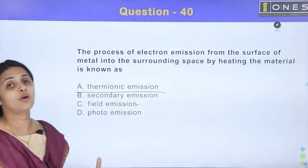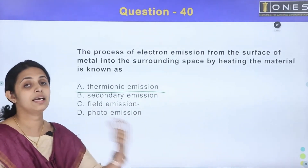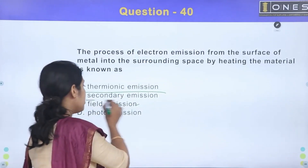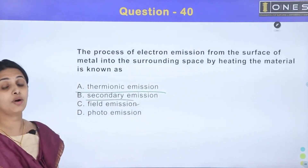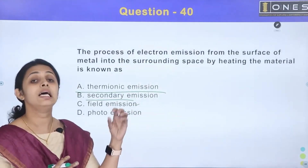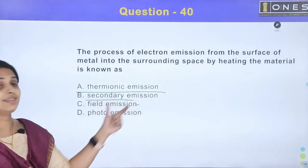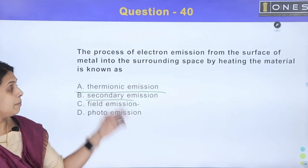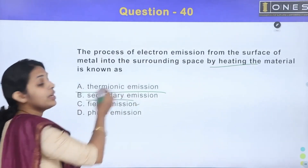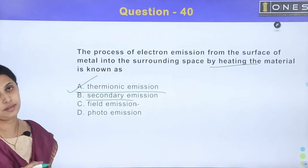Photo emission occurs due to light waves. Secondary emission is caused by high-velocity electrons striking the surface. Thermionic emission is caused by heating the metal, which gives electrons enough energy to escape the surface. Therefore, the answer is Option A: thermionic emission.